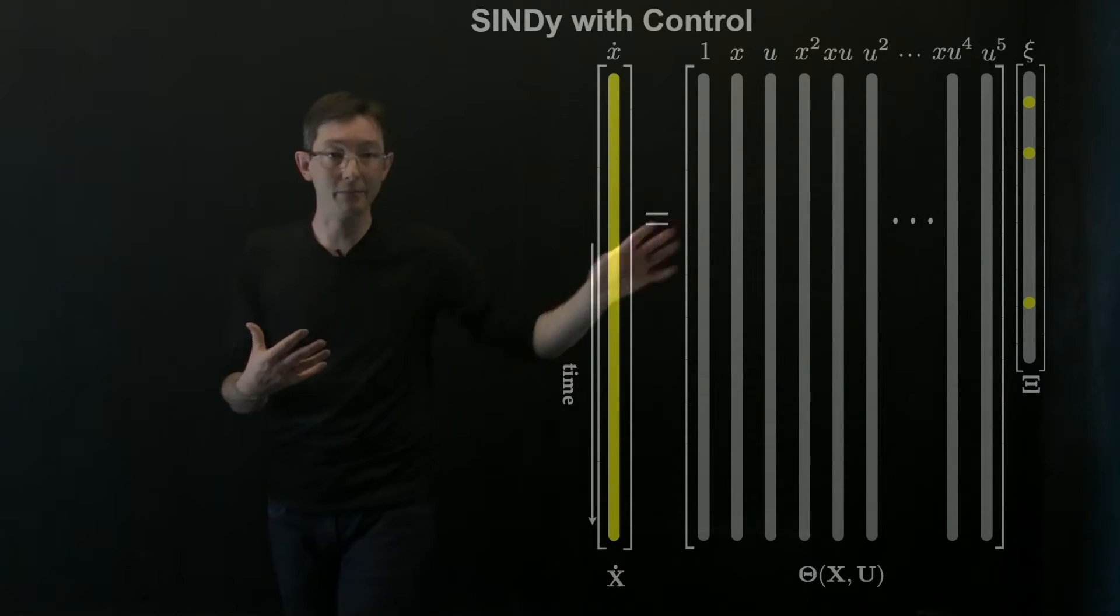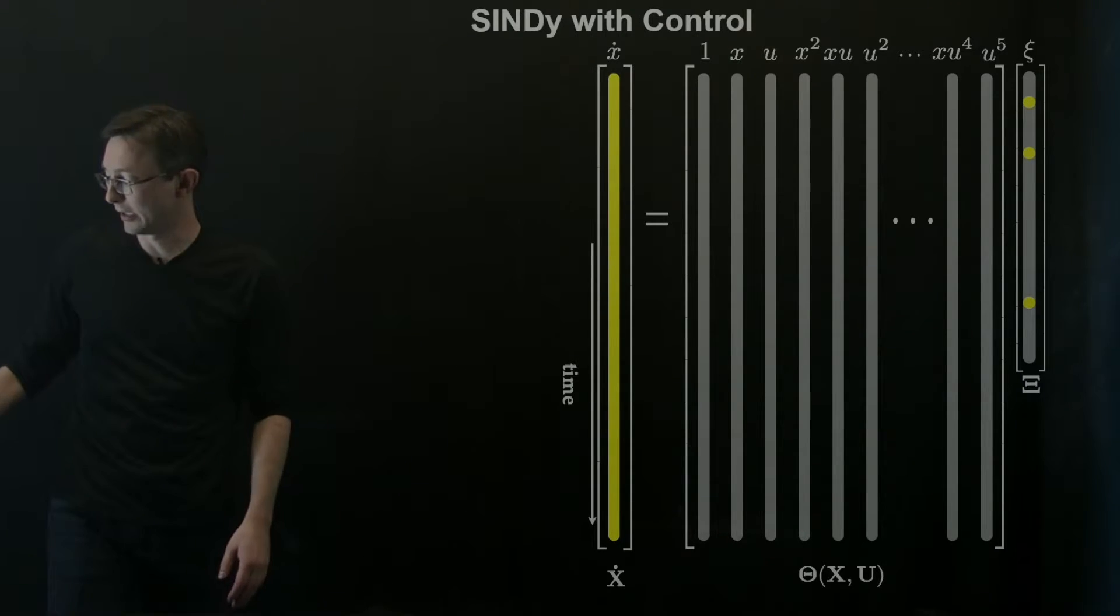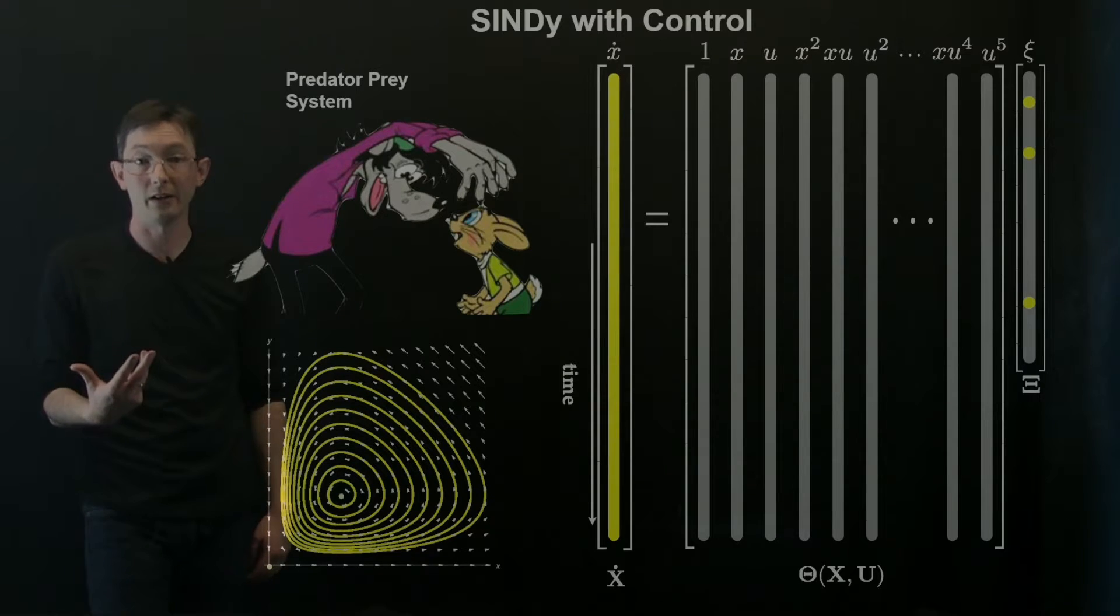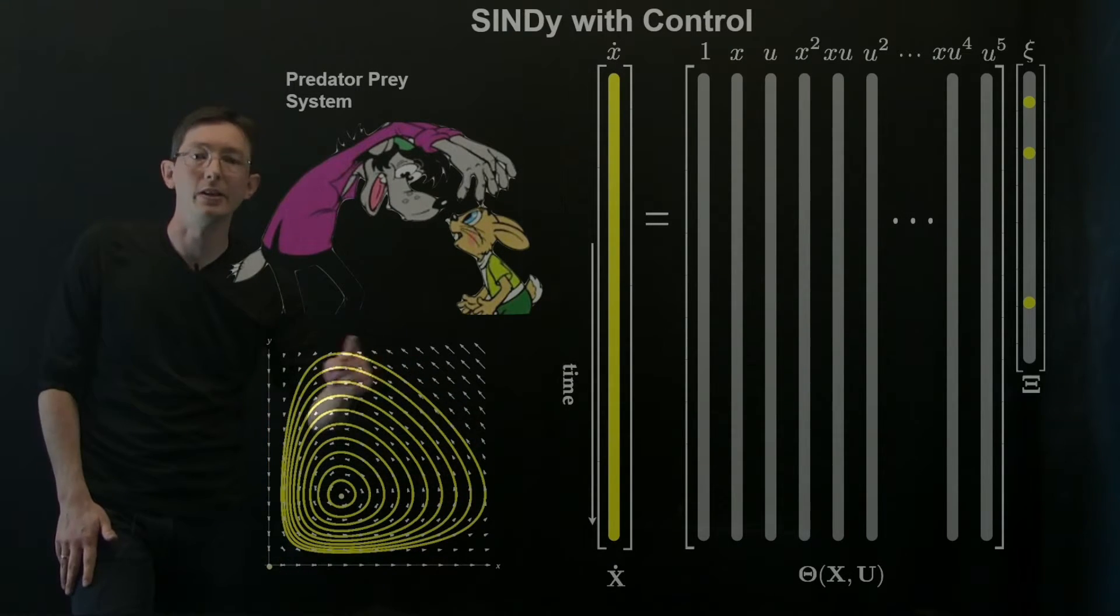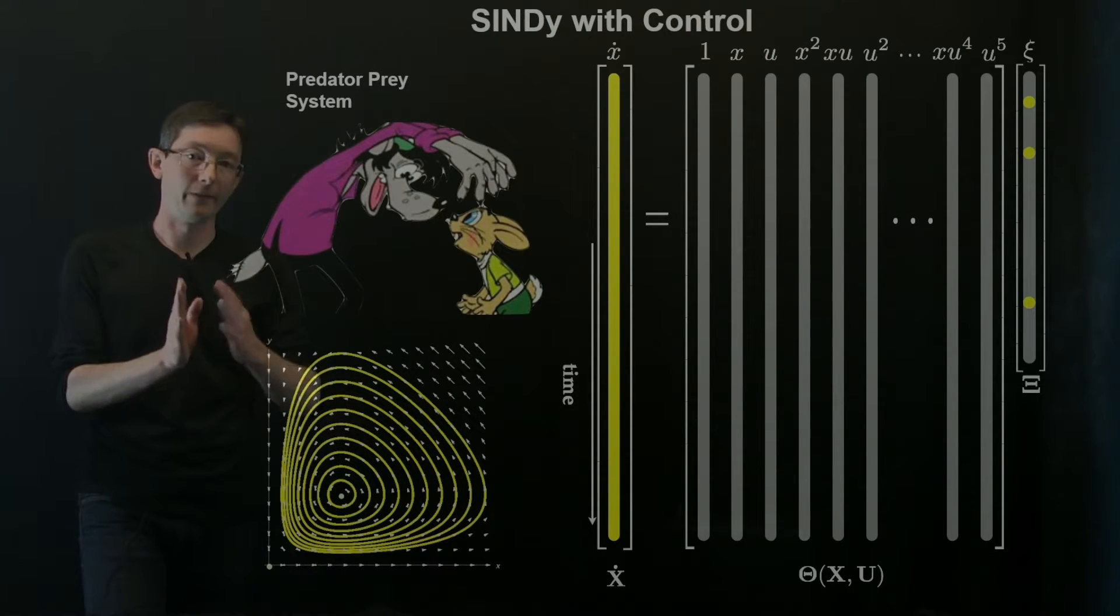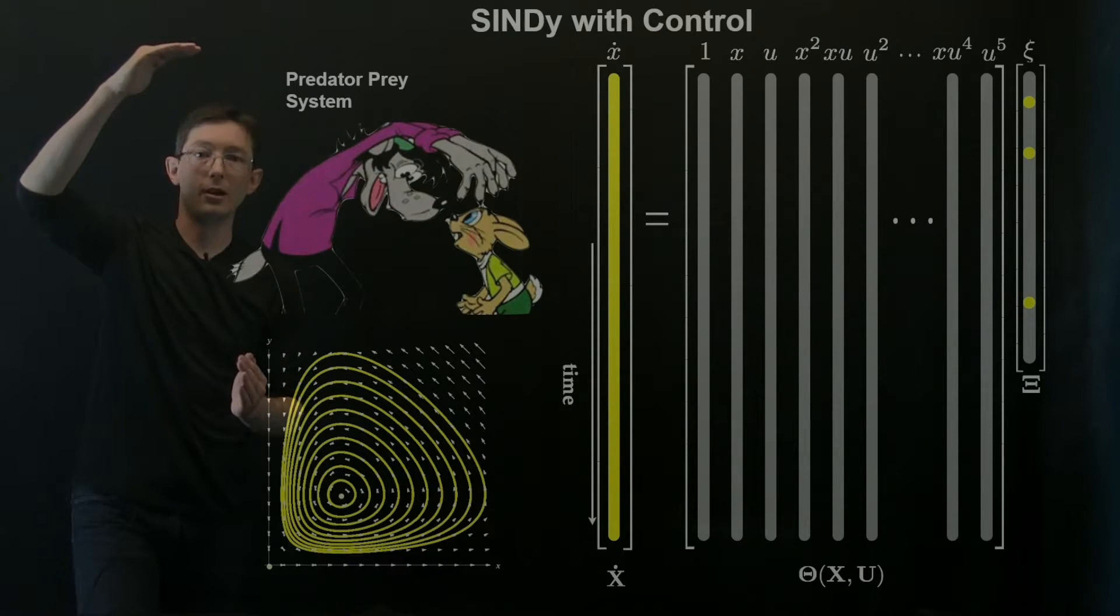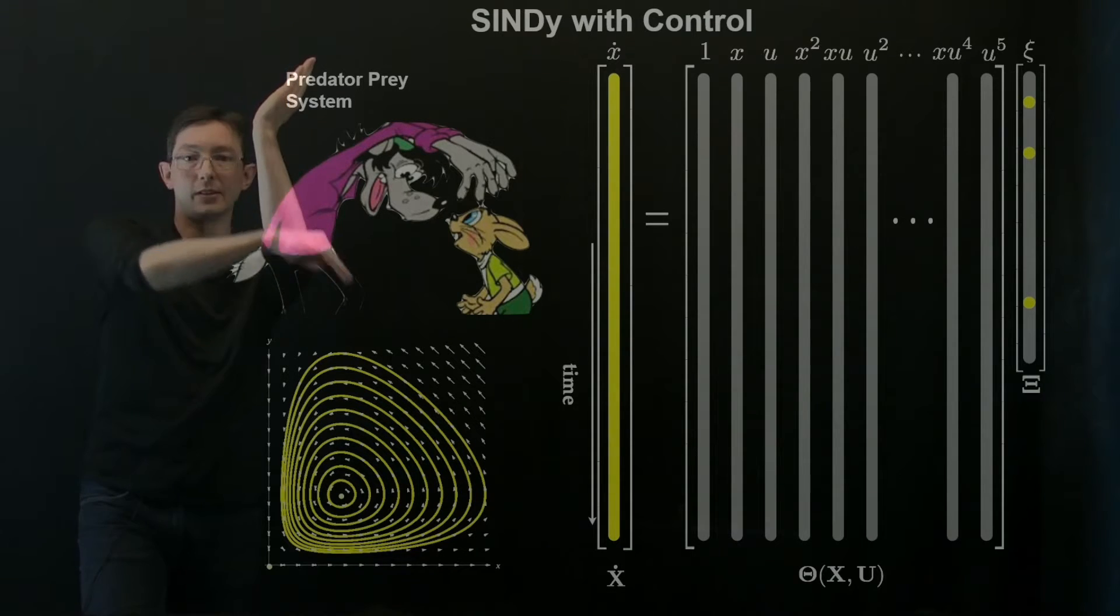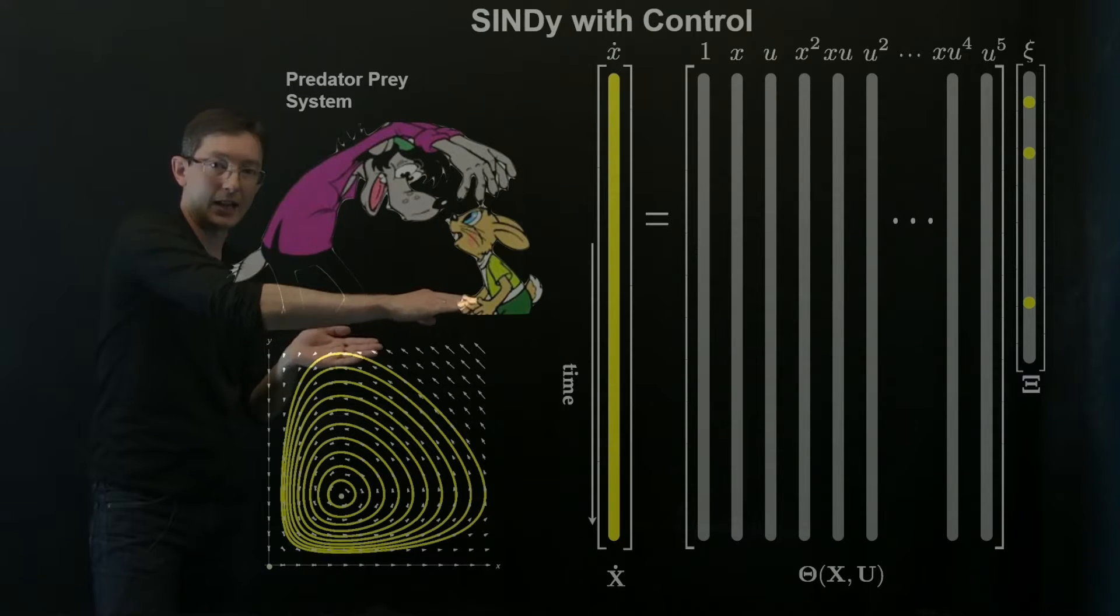So essentially I build this library from data. I'm going to illustrate this on a pretty simple system, so this is the classic predator-prey Lotka-Volterra, where you essentially get these oscillations in predator and prey populations, these kind of phase lagged oscillations. So you know, bunnies grow and then wolves grow to catch up.